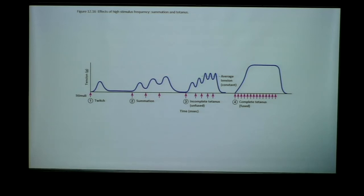When we fire a subsequent action potential, we generate more force naturally because the muscle has not fully relaxed. If we fire action potentials even faster, further increasing the frequency, we get incomplete tetanus at first, which involves unfused muscle contractions.